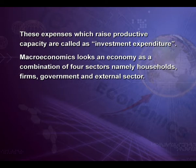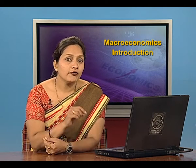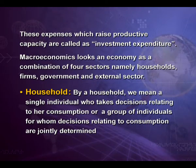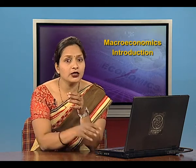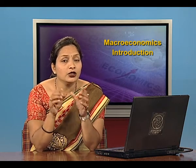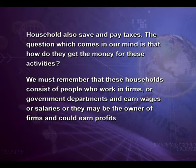Macroeconomics looks at an economy as a combination of four sectors: household, firm, government, and external sector. By household, we mean a single individual who makes decisions relating to consumption, or a group of individuals for whom consumption decisions are jointly determined. Households also save and pay taxes. These households consist of people who work in firms or government departments and earn wages or salaries, or they may be owners of firms and could earn profits.